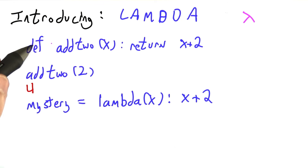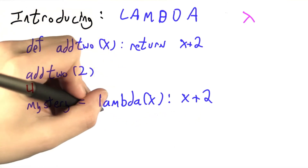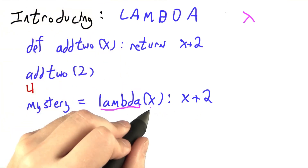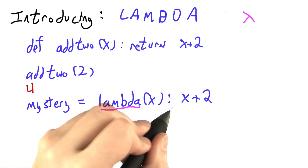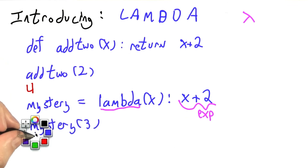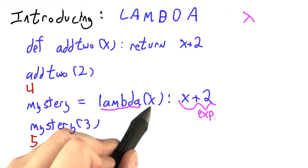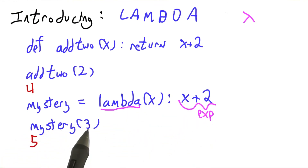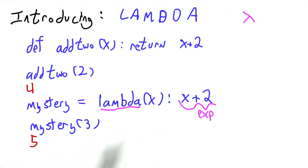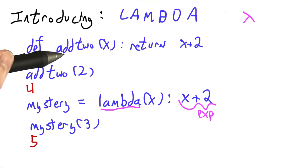Here I've written something apparently completely different. I'm assigning to the variable mystery the result of a lambda expression. The word lambda is fixed — it's a terminal. Then you list some number of arguments, then a colon, and then you can put any expression you like. If I call mystery of 3, I'm going to get out a 5, because lambda has made a function that takes x as its argument and returns x plus 2. We substitute 3 in for x: 3 plus 2 is 5. So mystery and add2 are in fact the same.